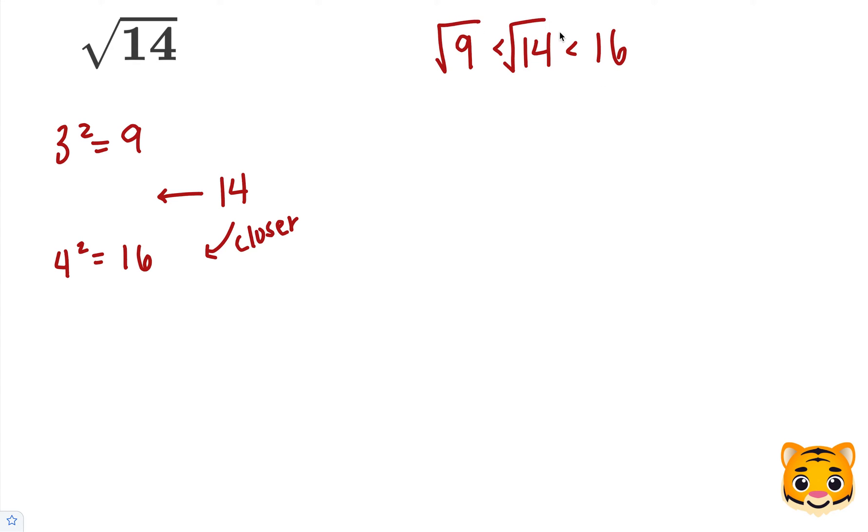Now, we can take the square root of all these values to get the square root of 9 is less than the square root of 14, which is less than the square root of 16. We can rewrite the square root of 9 as 3, and the square root of 16 as 4. Now we can see that the square root of 14 lies between 3 and 4.